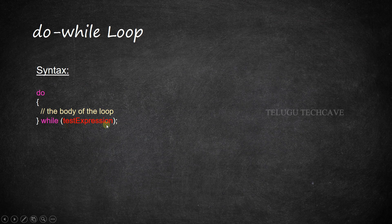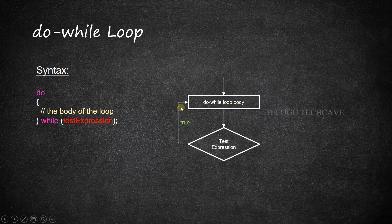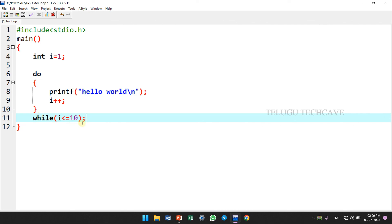Next is do-while. In do-while, the loop body executes first, then the condition is checked after the loop body. So in the do-while loop: first the loop body executes, then the condition is checked. If condition is true, the loop body executes again. If condition is false, the loop exits. In do-while, we write the loop body first, then the while condition with a semicolon at the end.